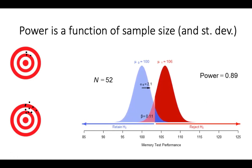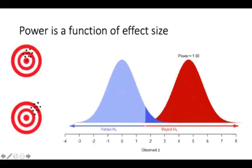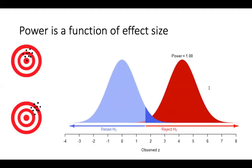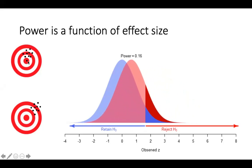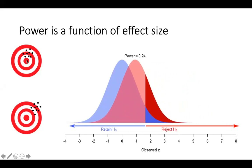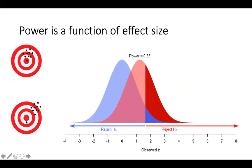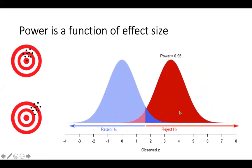Power is also a function of effect size. If the mean of our sample is very different from the mean of our population, it doesn't matter so much how inaccurate our dart throwing is. If we aim far enough away from the bullseye, the chance of accidentally hitting it is lower. If the difference between our sample and the population mean is not very high, we end up accidentally hitting our population mean every once in a while. But if we aim further and further away from the target, they become more and more different, and our power increases.